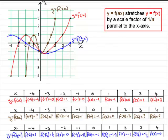So this represents a stretch of scale factor 2 parallel to the x-axis. All the points are pulled out away from the y-axis by a factor of 2, both to the right and both to the left.